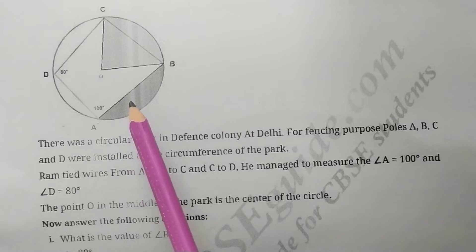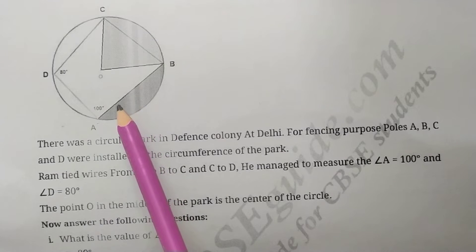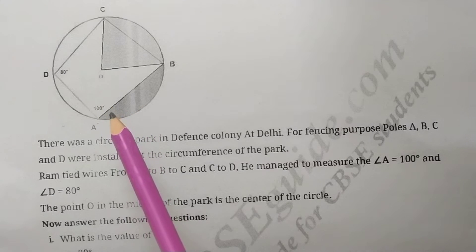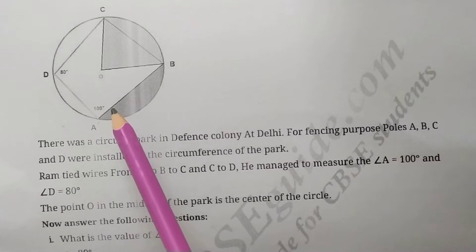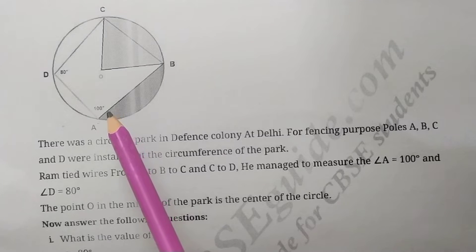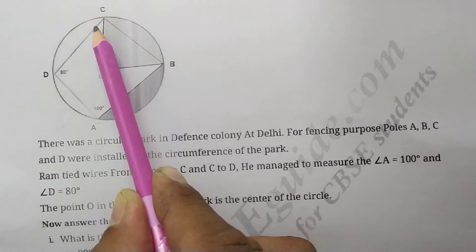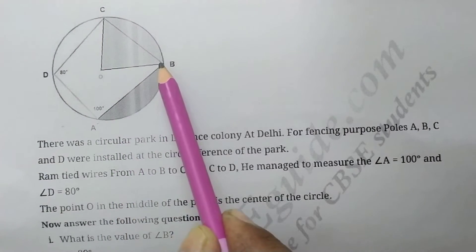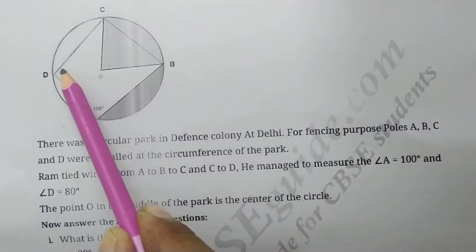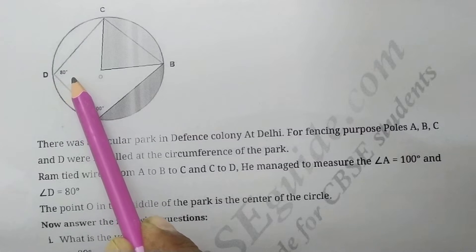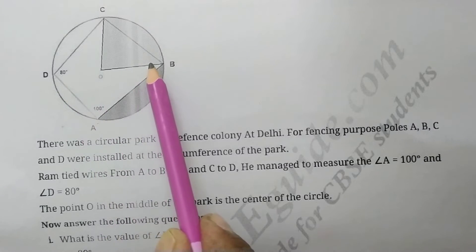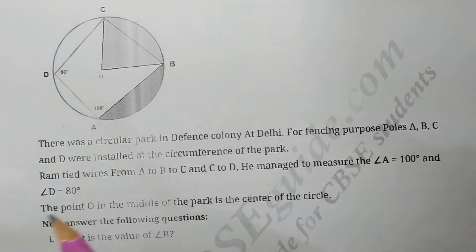One important property of a cyclic quadrilateral is that the sum of opposite angles is 180 degrees, meaning they are supplementary. So angle A plus angle C equals 180 degrees, and angle B plus angle D also equals 180 degrees.